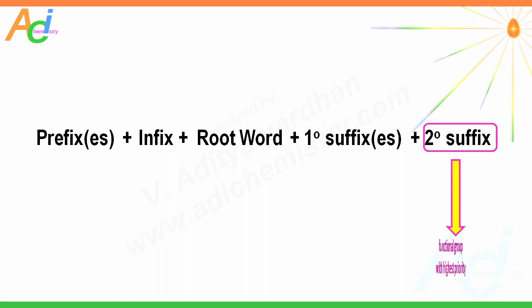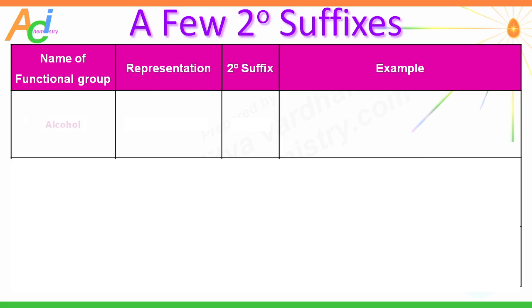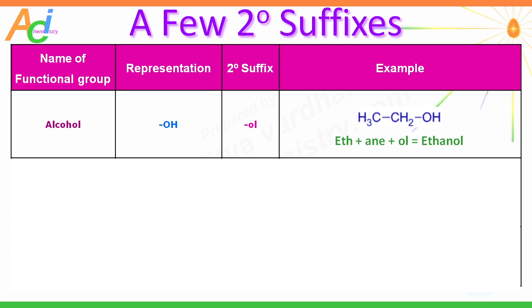A secondary suffix may be added after the primary suffix if there is a functional group in the molecule. The secondary suffix indicates the functional group with the highest priority. If there is an alcoholic functional group (OH), we use '-ol' as the secondary suffix. For example, a molecule with two carbon atoms, no unsaturation, and an OH group: the root word is 'eth', primary suffix is '-ane', and secondary suffix is '-ol', giving the IUPAC name ethanol.